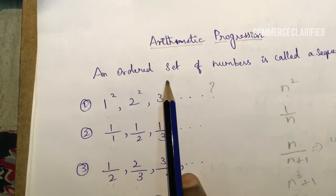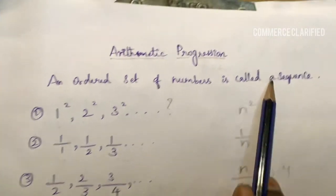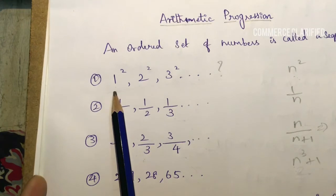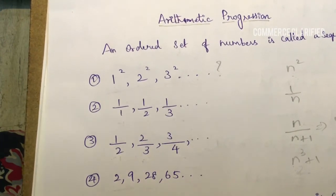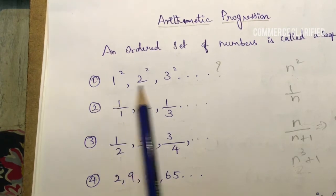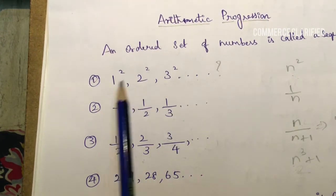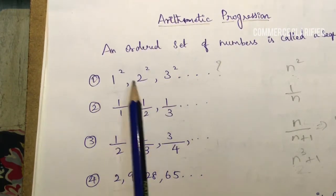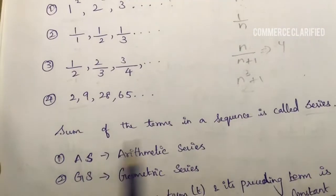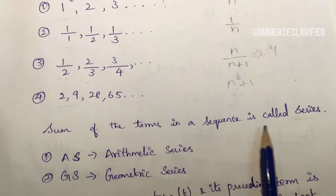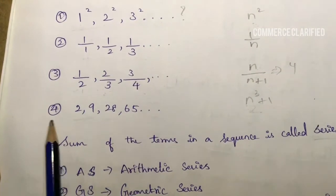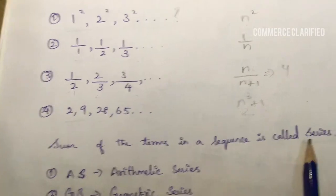An ordered set of numbers is called a sequence. Arithmetic Progression is also called a sequence or series. The sum of all the terms in the sequence is known as a series — for example, 2 plus 9 plus 28 plus 65. If you add these numbers, this is the series.